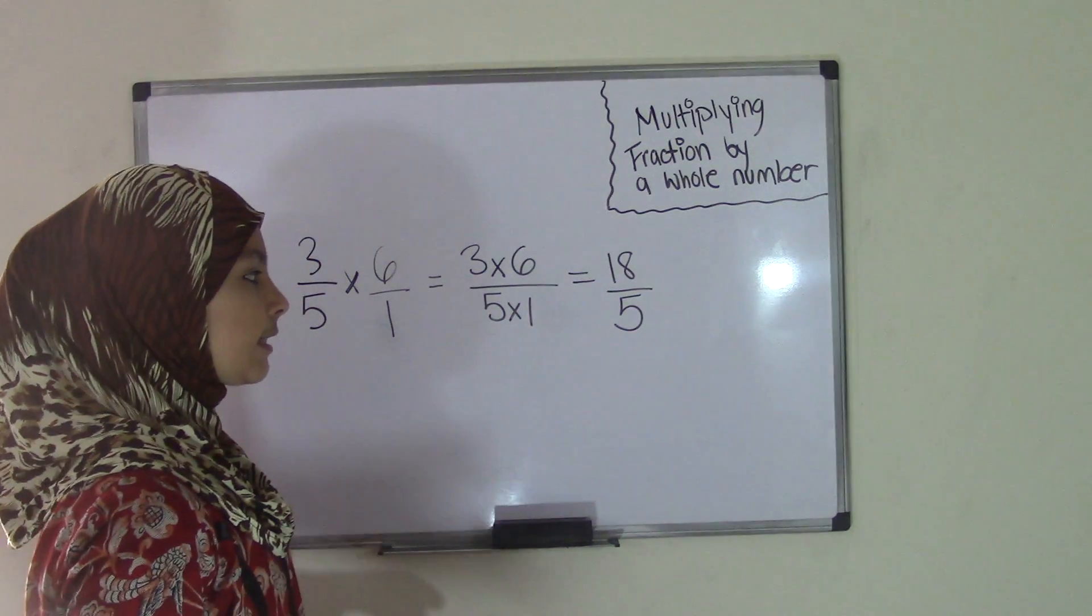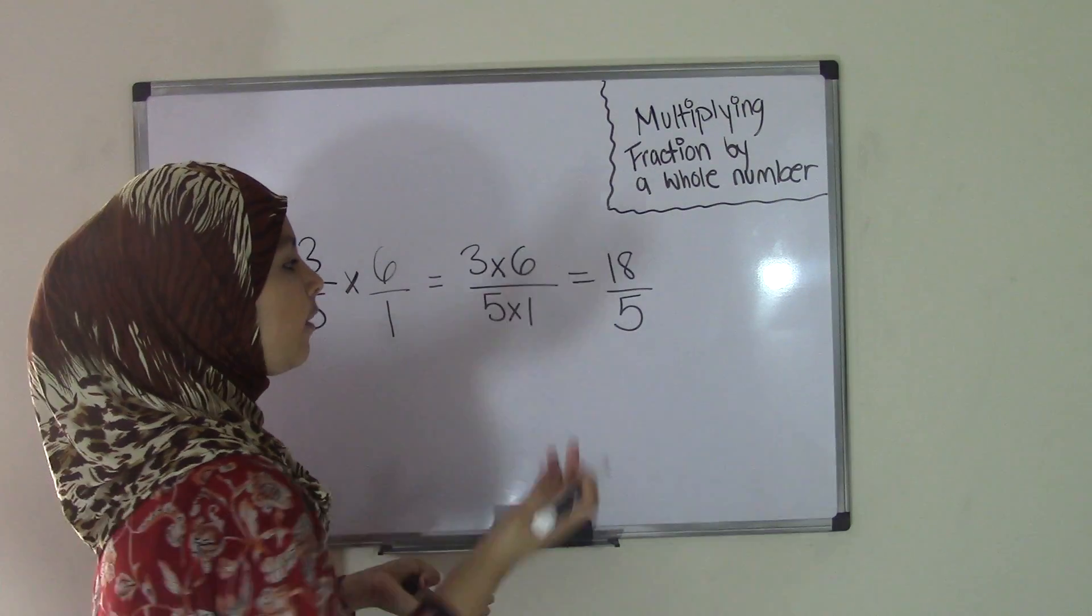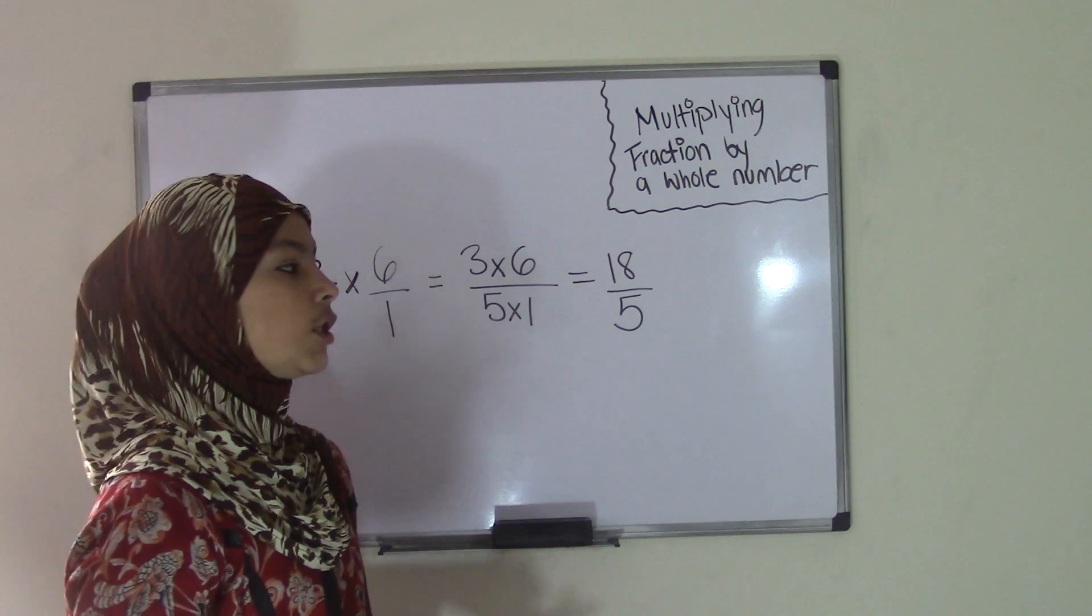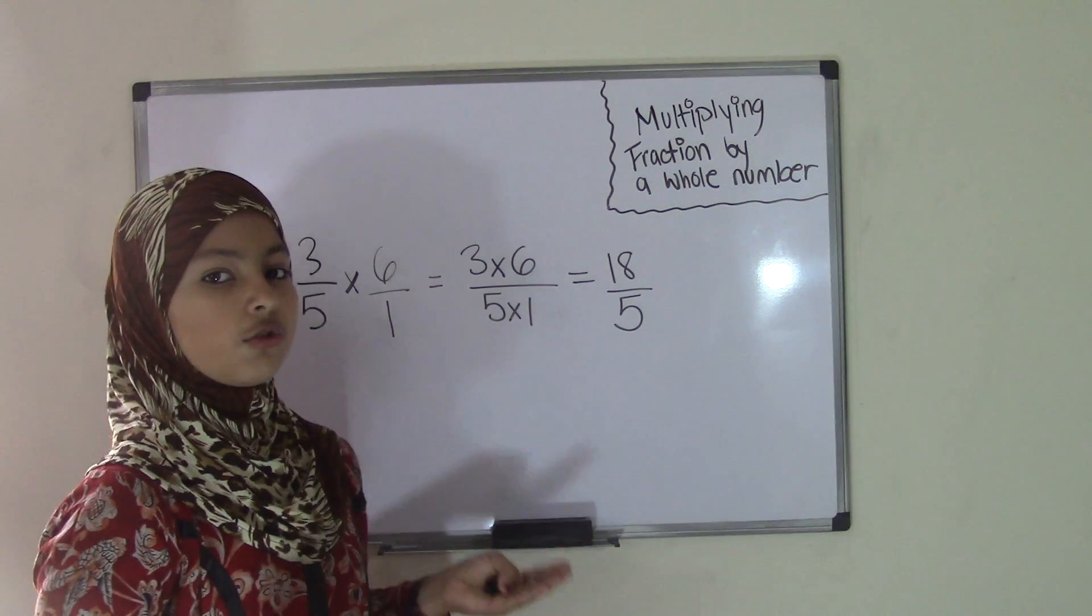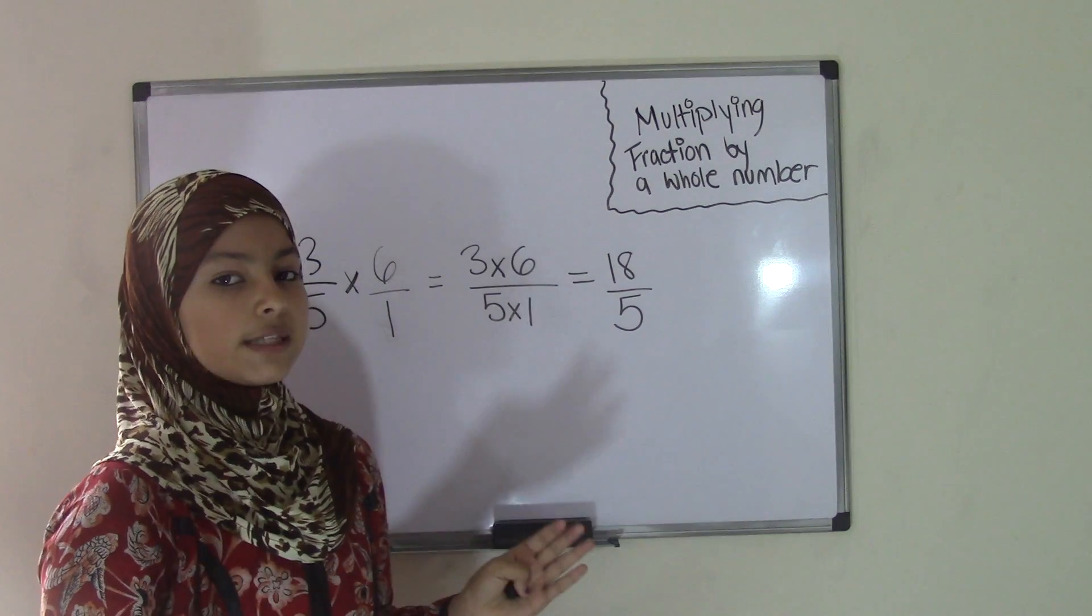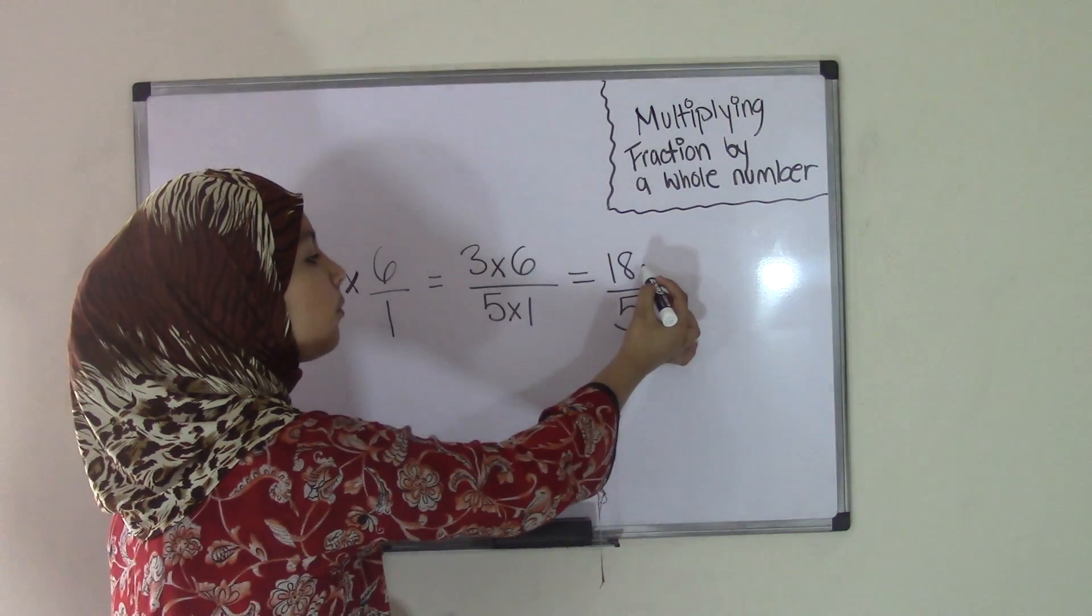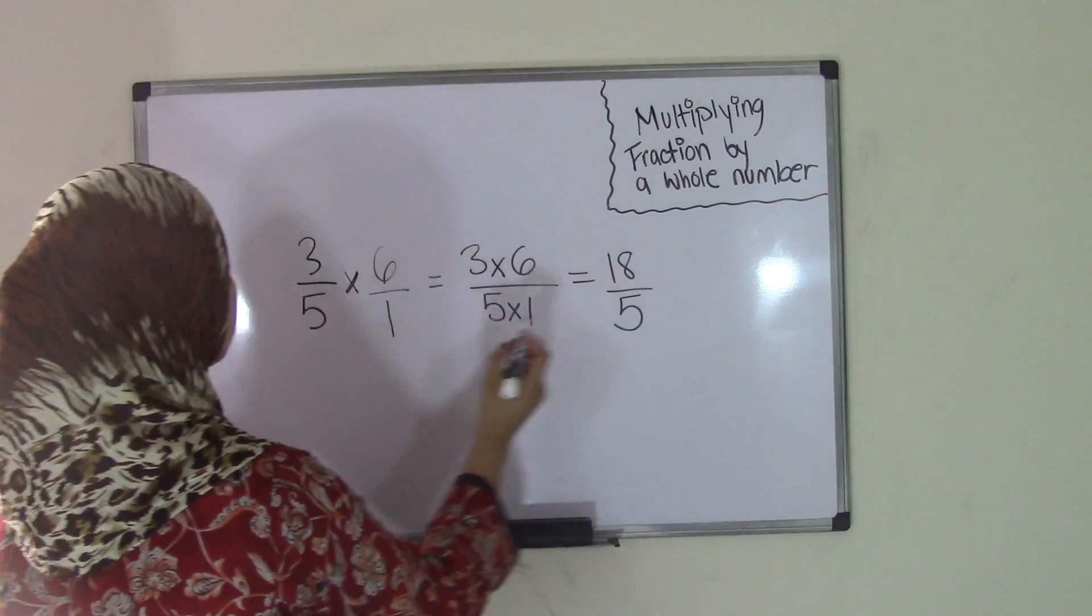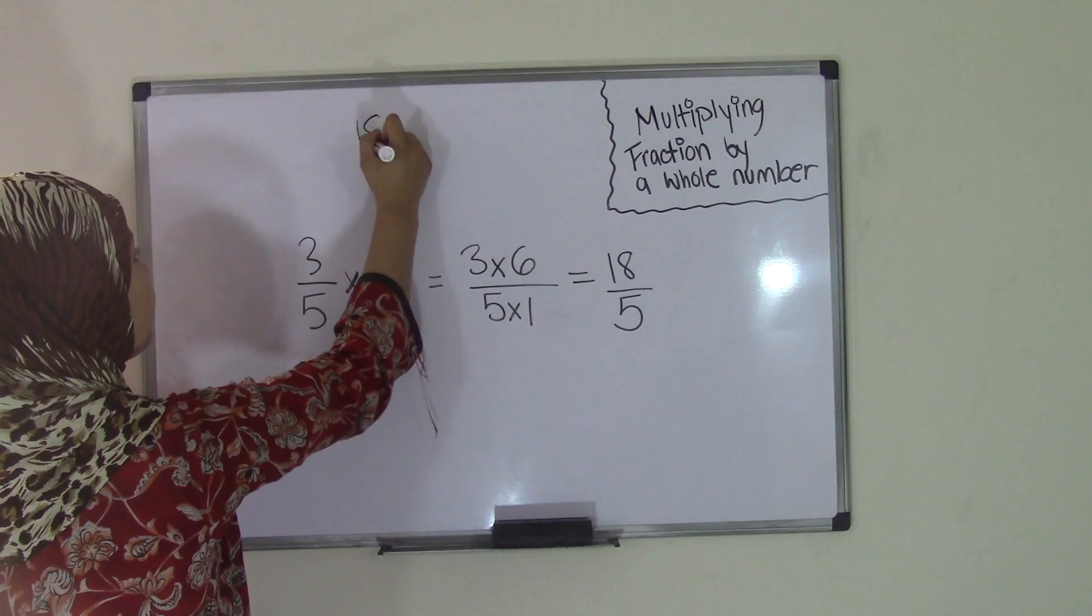Now we could leave this as an improper fraction because the numerator is greater than the denominator, but it's better if you change this into a mixed number, and I'm going to show you how to change an improper fraction to a mixed number. Here is the basic formula: you just divide your numerator by your denominator. So in this case, we have 18 divided by 5.